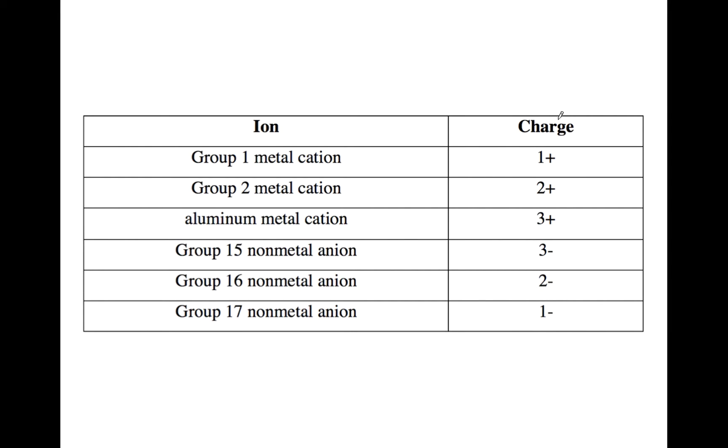You've probably seen this chart before in previous videos. This tells you how to determine the charge that a metal gets, depending on the column. Group 1 is plus 1, and group 2 is plus 2. And the chart also shows you the charge a non-metal gets when it gains electrons.